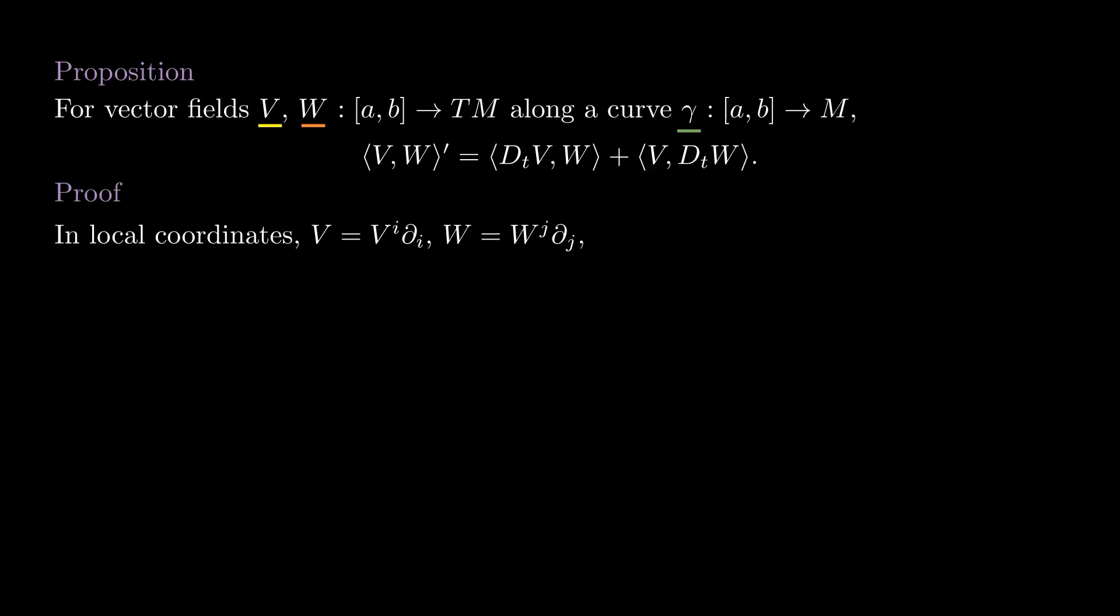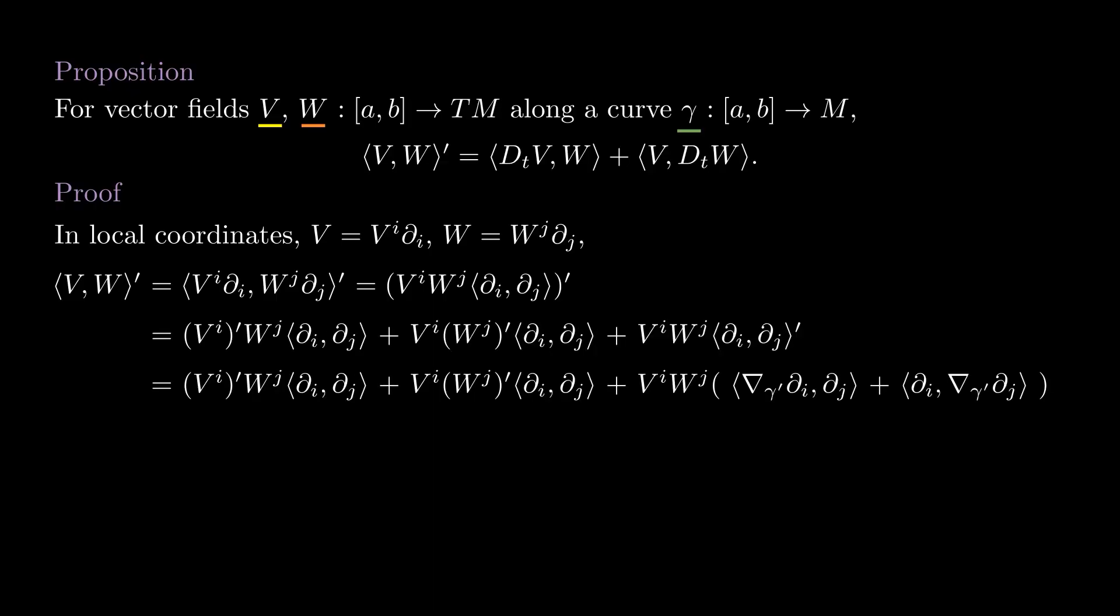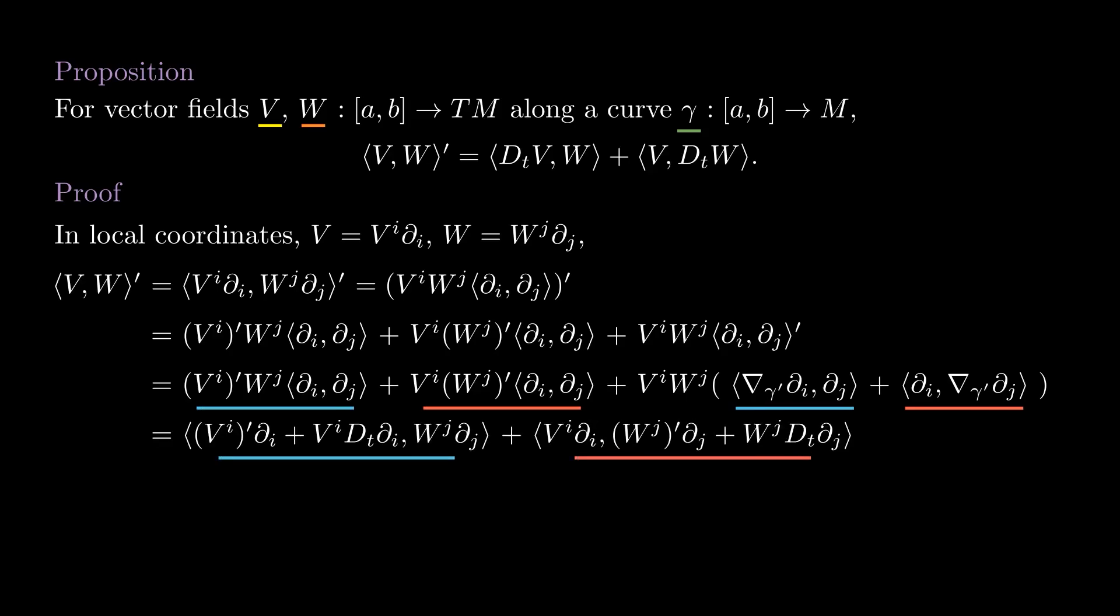To see that, we write V and W in local coordinates, expand the expression of the inner product using bilinearity, and then use the standard Leibniz rule. Here we use the fact that the connection is compatible with the metric, and after that we use bilinearity again to push the coefficients back inside the inner product, getting what we wanted to show.